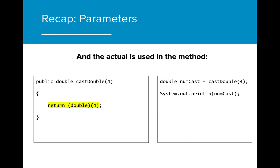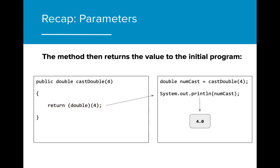The formal parameter int number is initialized with a value 4 and is then cast to a double. The method then returns the value to the initial program, which prints the value of numcast out to the console.